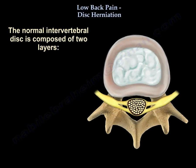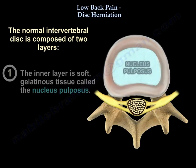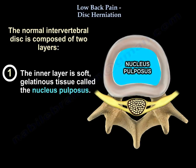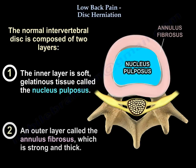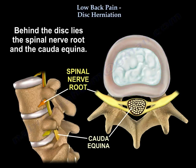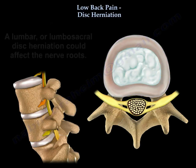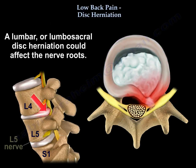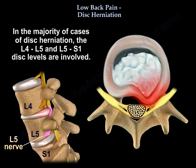The normal disc is composed of two layers: the inner layer, the soft gelatinous tissue called the nucleus pulposus, and the outer layer called the annulus fibrosus, which is strong and thick. Behind the disc lies the spinal nerve root and the cauda equina.